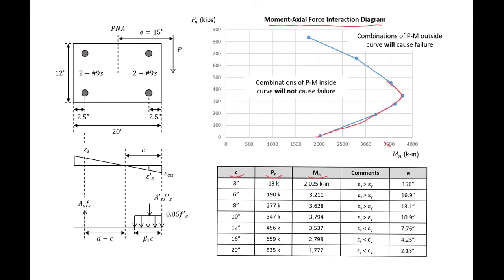Any load combination — any point inside the curve — will not cause failure, but any point lying outside the curve would cause failure. This is a way that we can check the capacity of our column with several different load combinations on it.